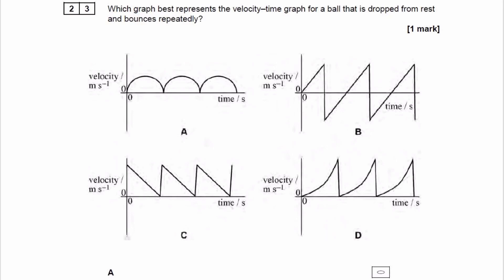Which graph best represents the velocity-time graph for a ball that is dropped from rest and bounces repeatedly? If it's dropped from rest, that means the initial velocity is 0, so therefore it can't be C. The initial velocity for graph C is not 0, so we know it's not going to be that option.